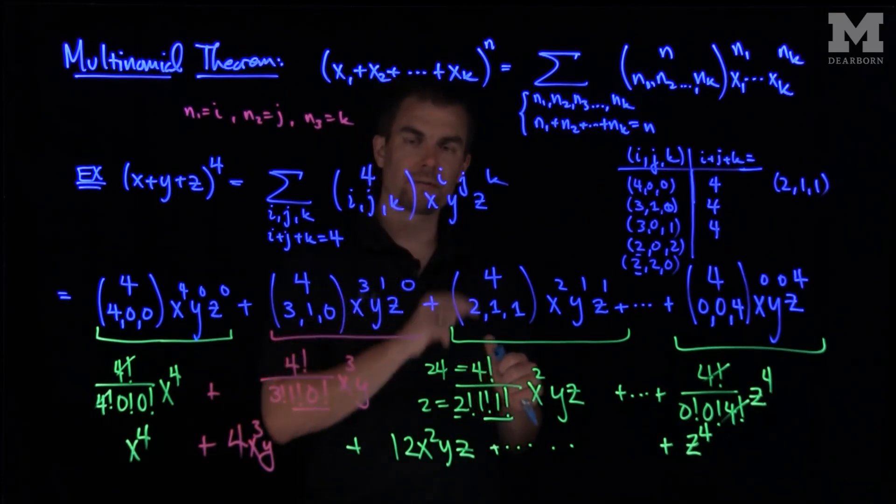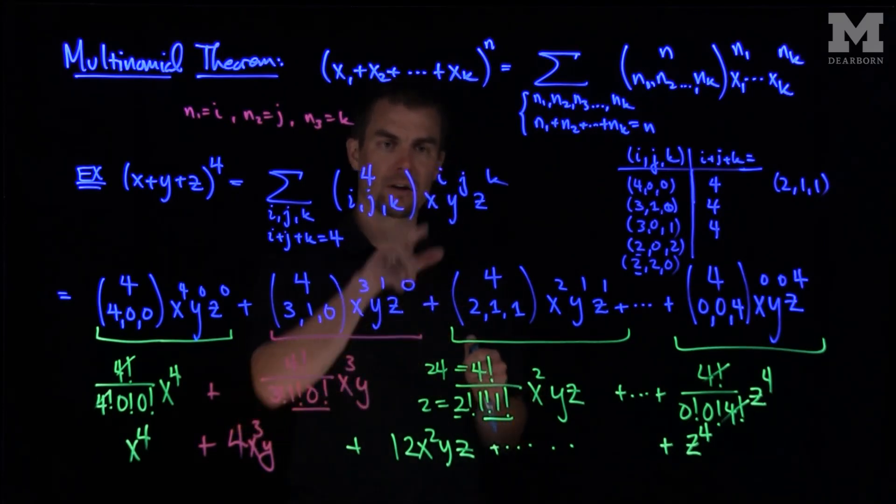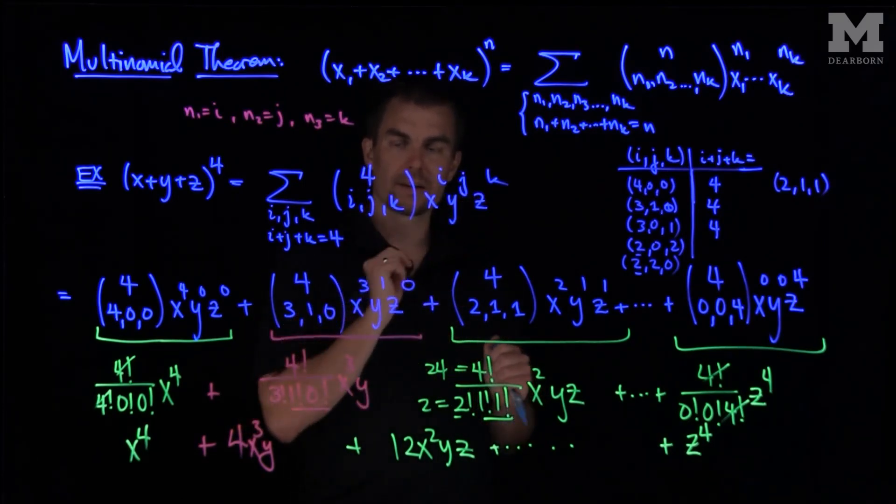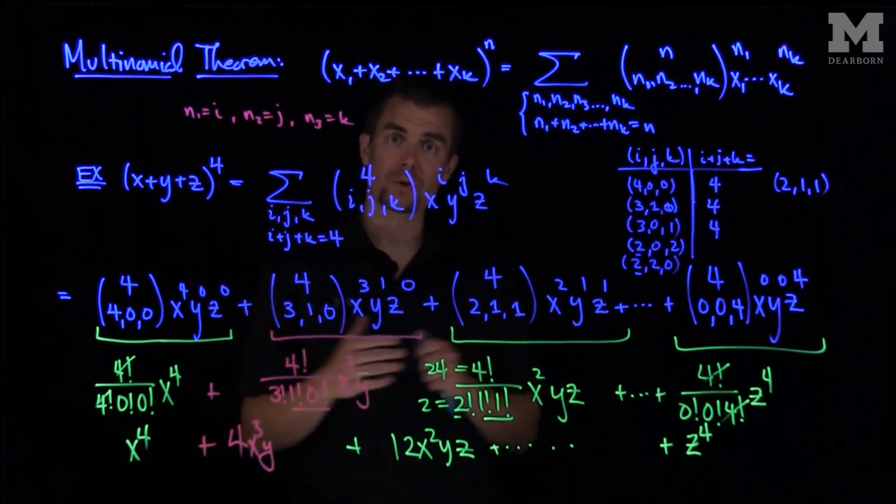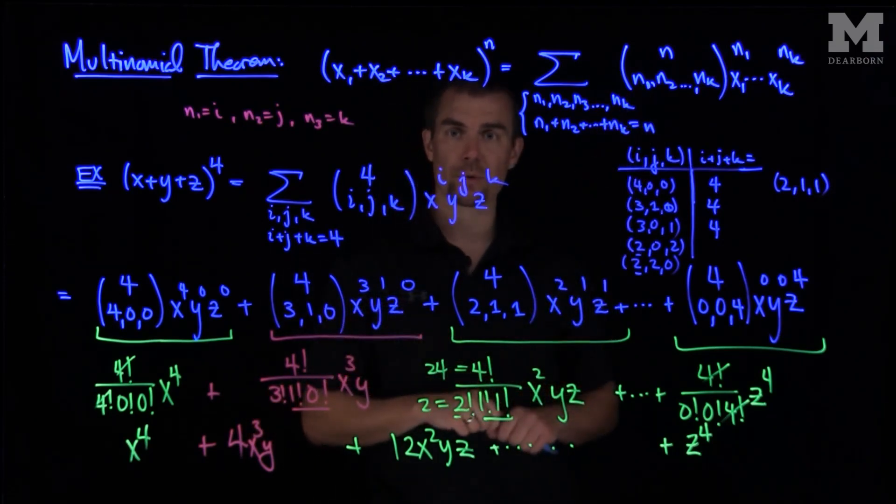Now oftentimes they'll ask you to find a certain value of these things. They'll say what is the coefficient of x²y²z⁰. And then you plug in i equals two, j equals two, k equals zero, and find the corresponding coefficient using the multinomial theorem.